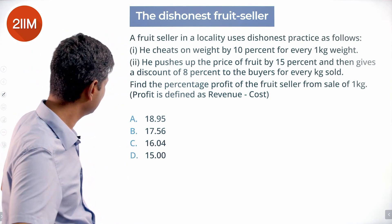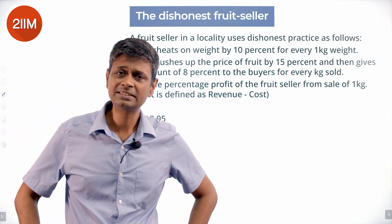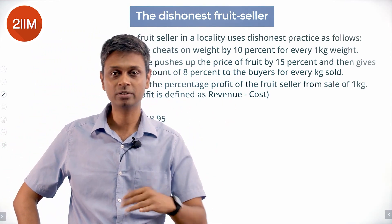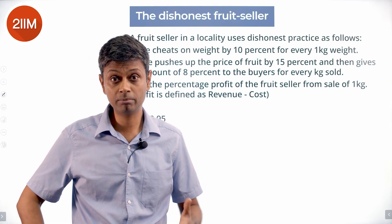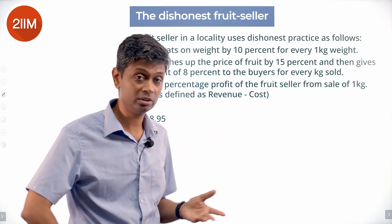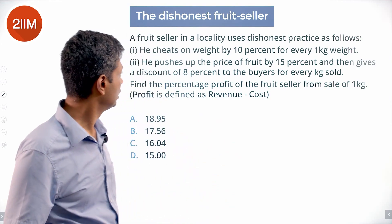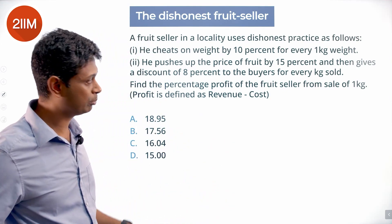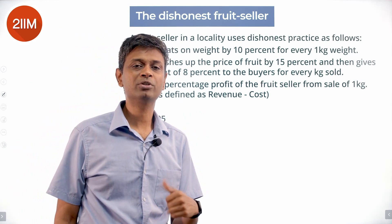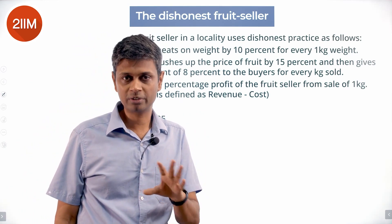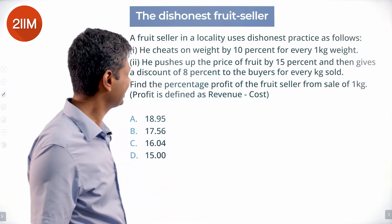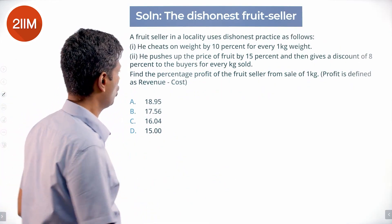One clarification: there should be a sentence saying he claims to sell at cost price. If it were already marked up by 20% and then doing all this, it would be a whole different dynamic. So he pushes up the price — or rather, his selling price is 15% more than cost price — not pushing it up from an already marked-up price.